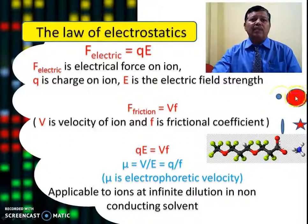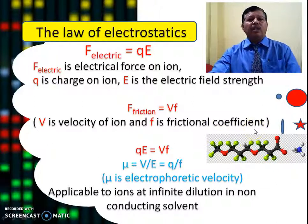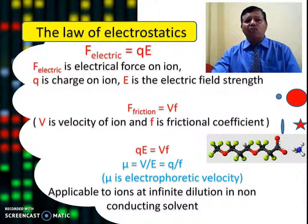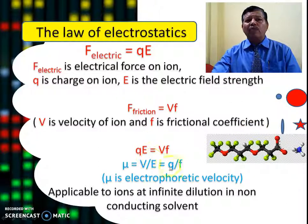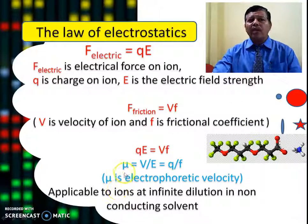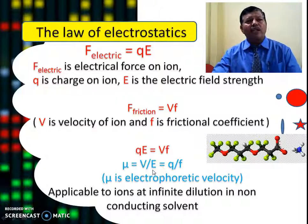The frictional coefficient depends on three factors: the shape, size, and structure of the molecule or ion. When we equate the electric force and the frictional force, mu can be calculated as mu equals v divided by e, where v is the velocity of the ion and e is the electric field strength.